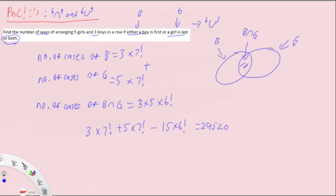This is a simple example of using union and intersection. When adding cases, we need to be careful to subtract the case where both events happen simultaneously, because of double-counting. That's the idea of intersection and union. Thank you.